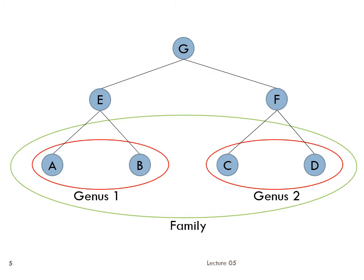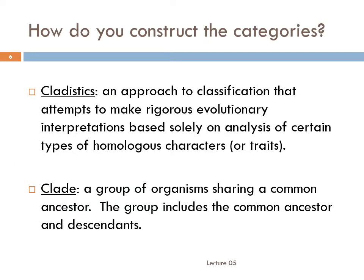But how do you begin constructing those categories in the first place? How did I know to put A and B in genus 1, but to put C in a different genus? It can't be because I already knew their ancestry, because the main reason to study taxonomy is to learn the ancestry. Today, most evolutionary scientists classify species using the strategy of cladistics — an approach to classification that attempts to make rigorous evolutionary interpretations based solely on analysis of certain types of homologous characters or traits. A clade is a group of organisms sharing a common ancestor, consisting of the common ancestor and all its descendants.